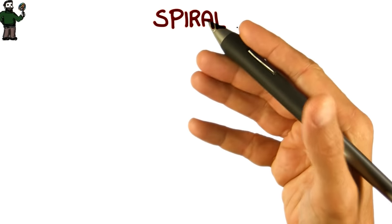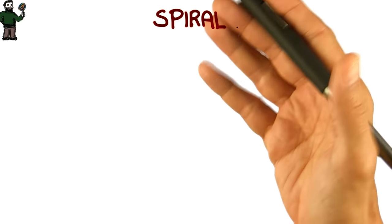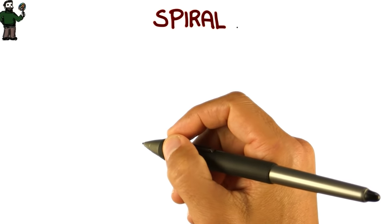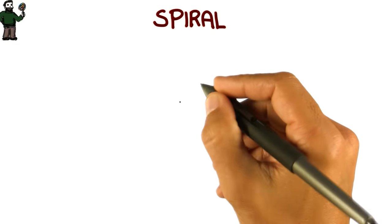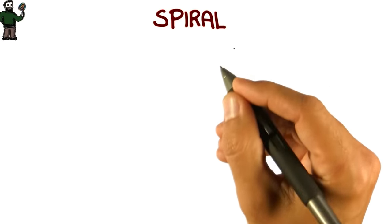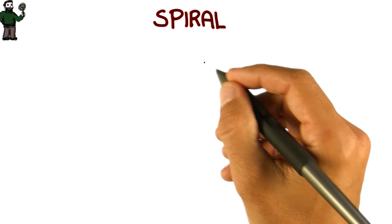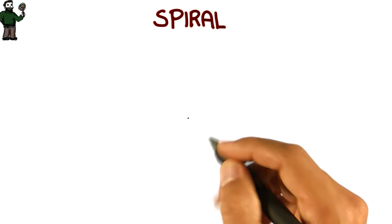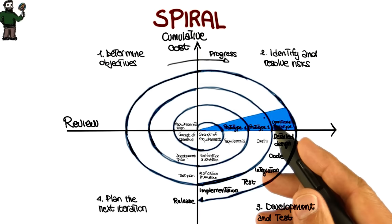The next model that we will discuss is the spiral model, which was first described by Barry Boehm, who is the professor that we interviewed at the beginning of this lesson, in his paper from 1986 entitled 'A Spiral Model of Software Development and Enhancement.' One of the main characteristics of that paper is that it was describing the spiral model using a diagram, which is the one that I'm showing you here.